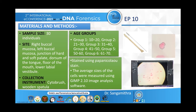In forensic odontology, one of the most primary requirements is the identification of the age of a person — basically, a John Doe or Jane Doe identification. There are various methods used to determine the approximate age of a patient, and morphometric analysis could also play a role in identifying this.